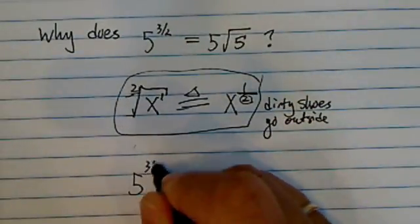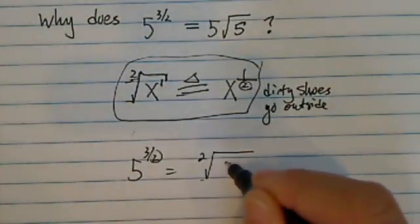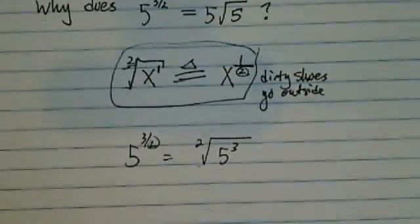let's take a look at 5 to the 3/2, what happens to it? Okay, now remember the dirty shoe goes outside. Okay, the thing on top comes into this.